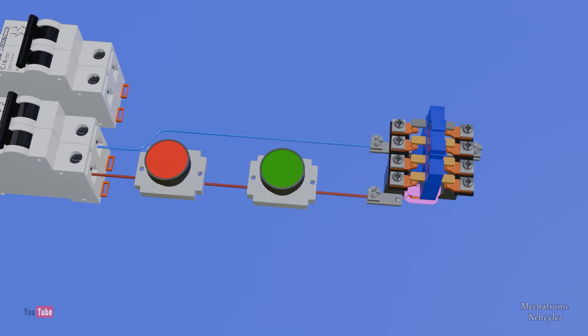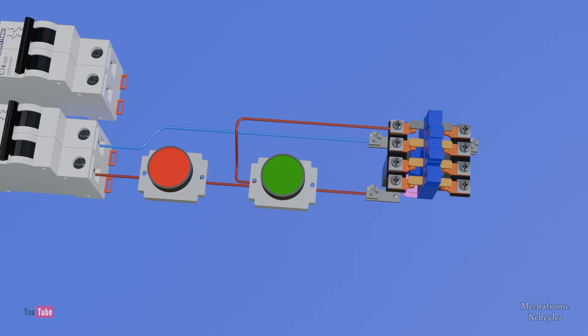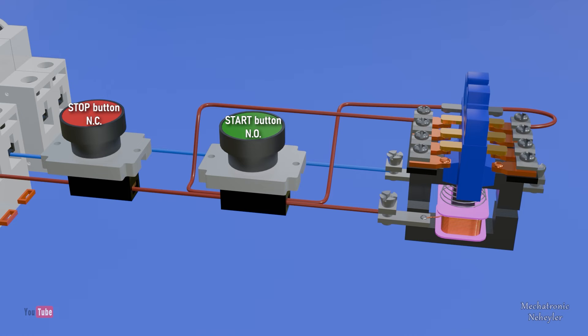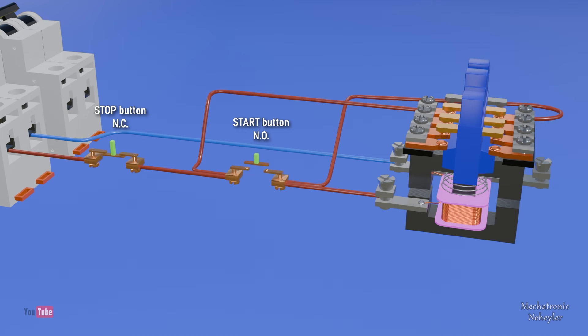To perform self-retention, a cable must be connected from between the push buttons to terminal 13 and from terminal 14 to terminal A1 of the coil. As for the buttons, the stop button must be normally closed, that is, in initial conditions it must allow current to pass, while the start button must be normally open.